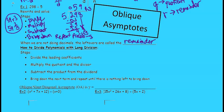Now, when you're dividing polynomials with long division, you do the same thing as with just numbers. Divide the leading coefficients. Multiply the quotient and the divisor. Subtract the product from the dividend and bring down the next term and repeat until there's nothing left to bring down.